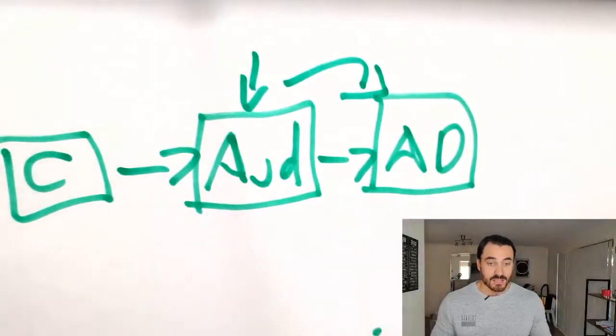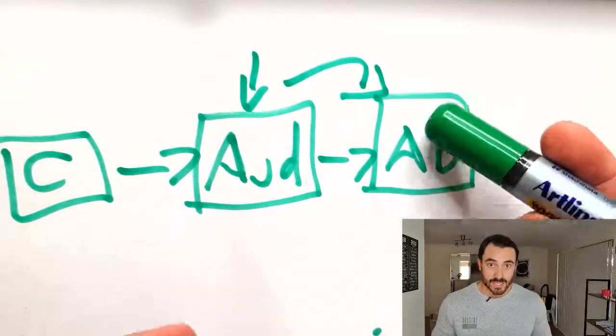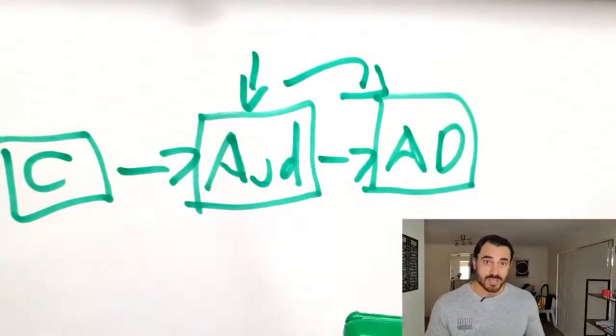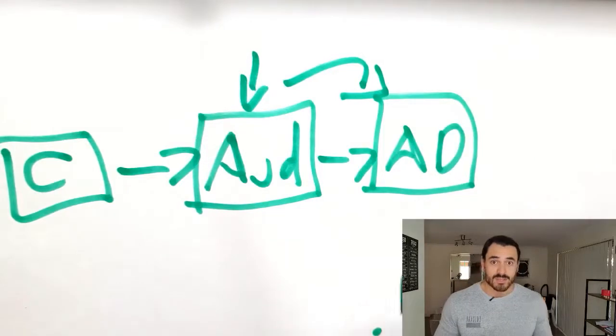Is your ad compelling enough? Is it engaging? Is it using cool imagery? Is it enlisting someone to click on it and take the next step, whatever that step is? You don't actually know, and that's why you want to test variables of different ads. So that's tip number one.